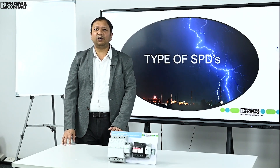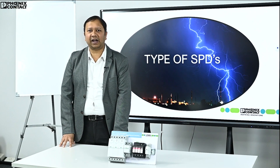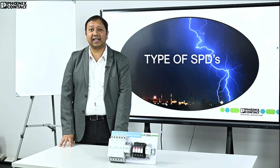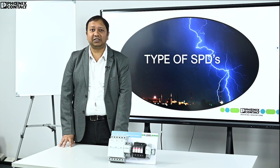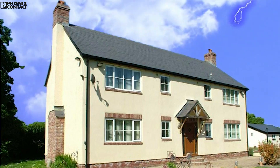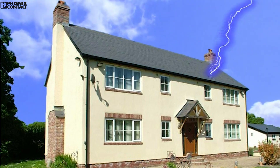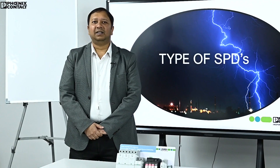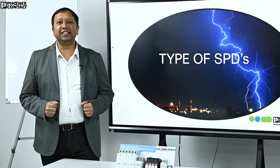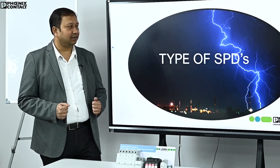According to IEC 62305, understanding of lightning protection zones is very important for an effective SPD selection and for proper surge energy coordination. Let's understand the lightning protection zones of a building.